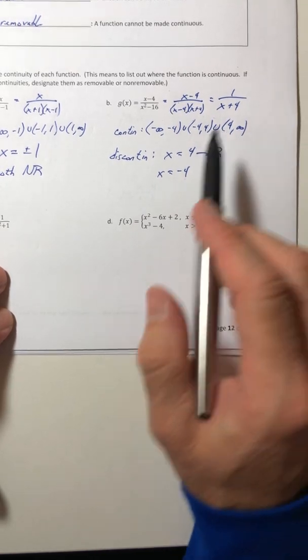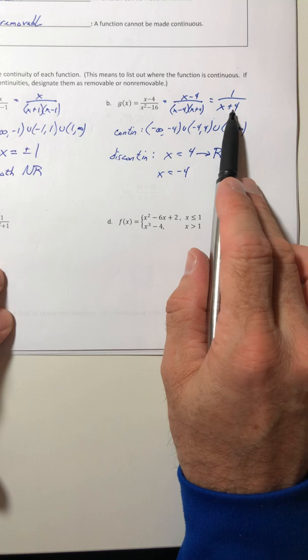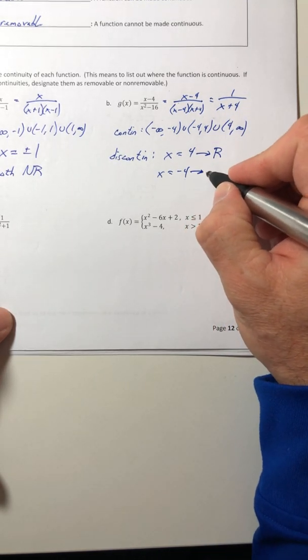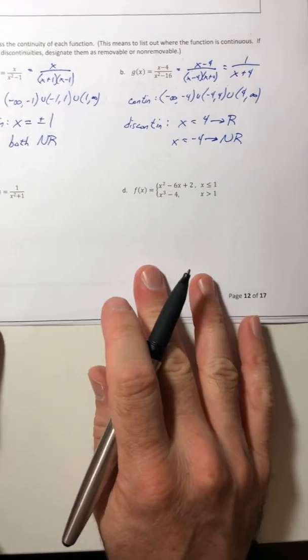The negative 4, you still can't use it. It still makes a 0 in the denominator, so you did not remove it. So that's non-removable.